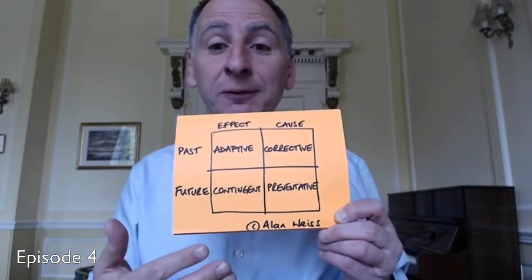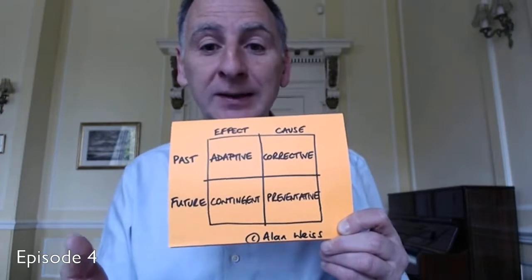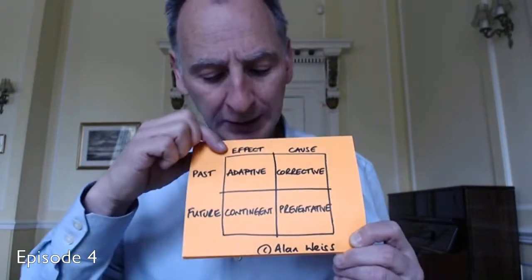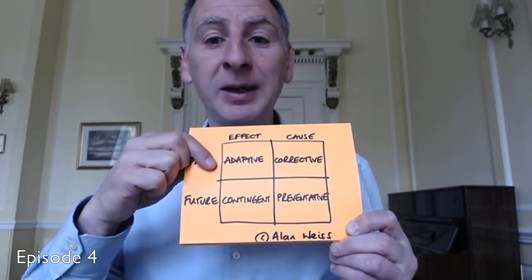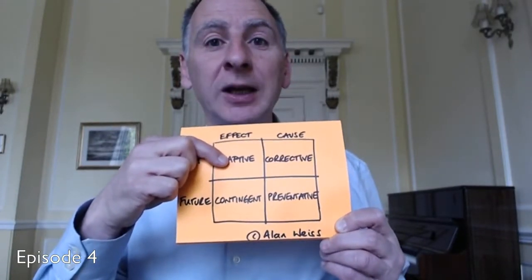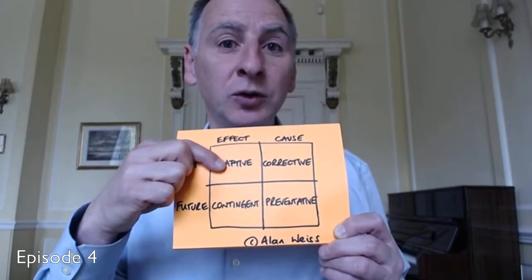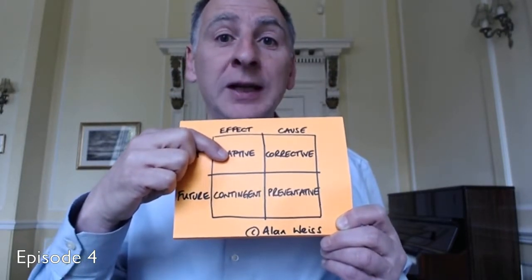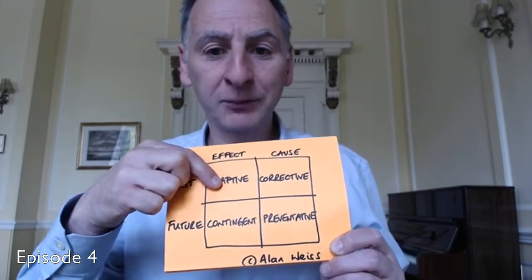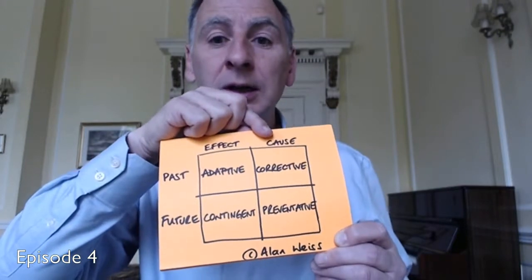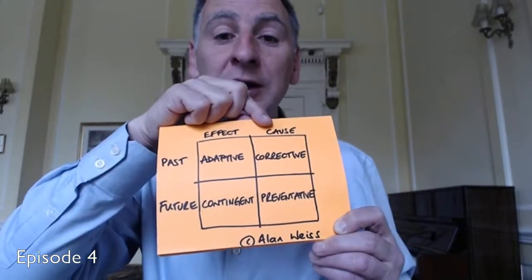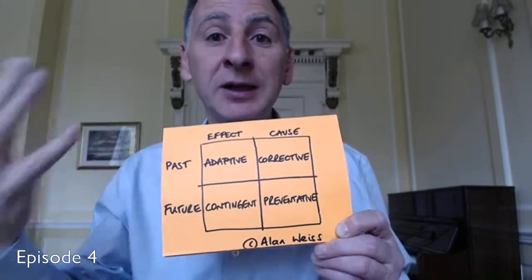If you create that two-by-two chart, there are four boxes to look at. Taking the example of leaking water pipes: if you're dealing with the effect of a past situation — the water pipes are leaking — you have some adaptive actions you can take, like putting a bucket under the leaking pipe and managing the buckets as they fill up. Or you could call in a plumber and fix the leak — those are corrective actions, dealing with what has already happened.